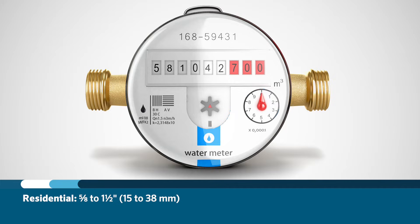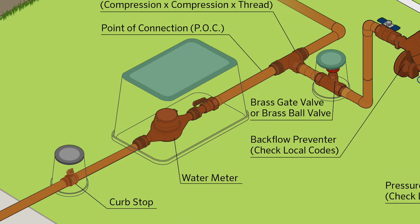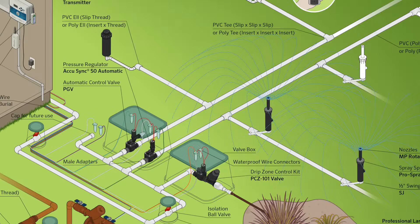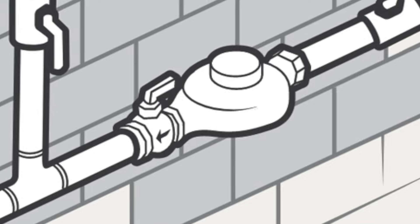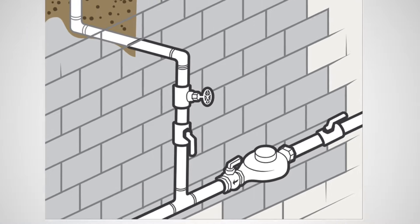Meter sizes range from 5/8 inch to 1.5 inch for residential properties, and can range from 5/8 inch to 4 inches or larger for commercial irrigation systems. A typical warm weather installation will have a meter box where water comes from the city main, through the water meter, to the delivery line. For cold climates where freezing temperatures are likely, the water meter may be placed inside the building.